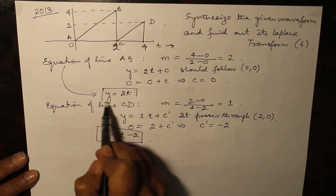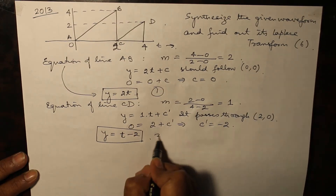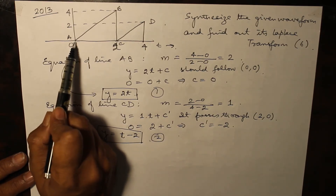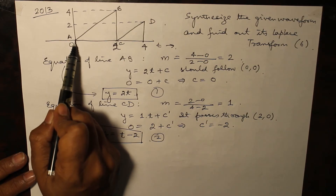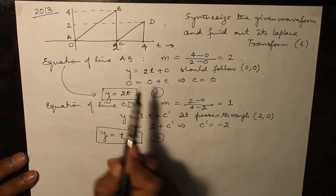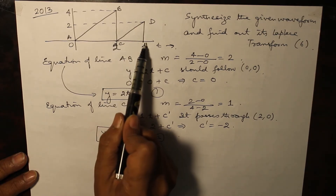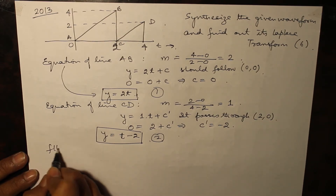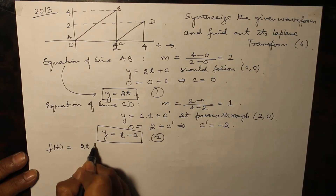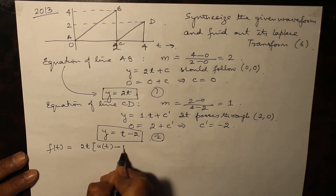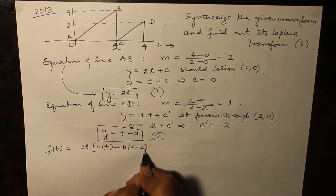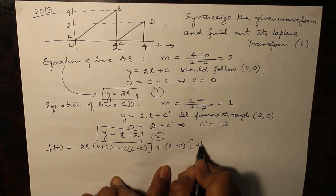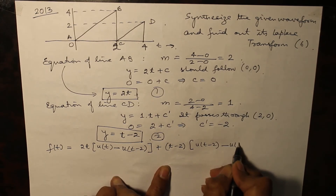Now we have two equations: y equal to 2t and y equal to t minus 2. The first gate starts from t equal to 0 and goes up to t equal to 2, and the second gate starts at t equal to 2 and goes up to t equal to 4. Therefore f(t) can be written as 2t·[u(t) minus u(t minus 2)] plus (t minus 2)·[u(t minus 2) minus u(t minus 4)].